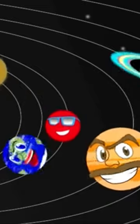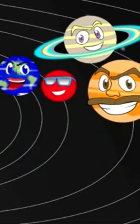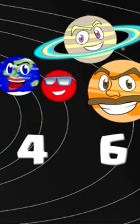There are 8 planets, spinning round the sun, 2, 4, 6, 8 planets, let's count them one by one!